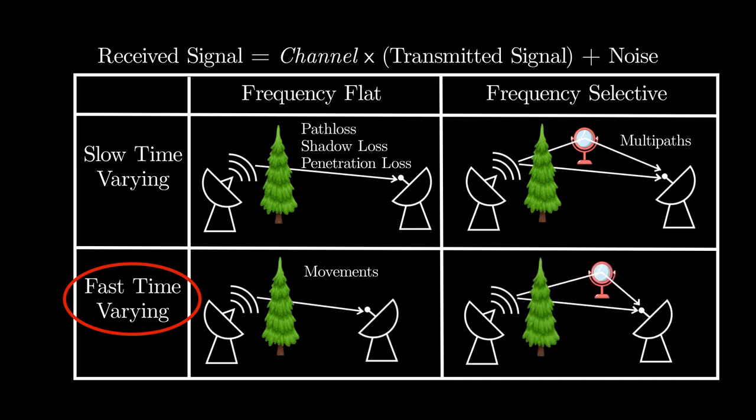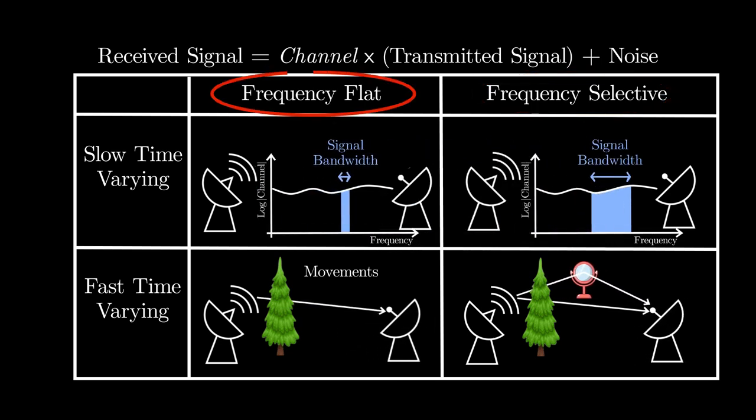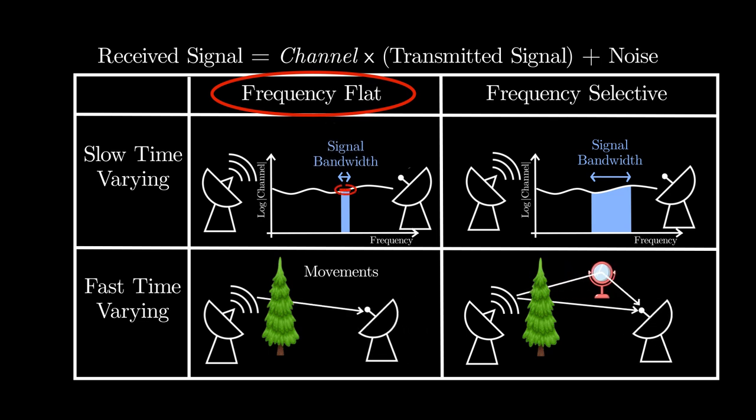As a caveat, these are not clear-cut definitions. For example, if frequency variation is low compared to signal bandwidth, then the channel is still called frequency-flat fading because the channel is flat across the frequency spectrum used for the transmission and reception.